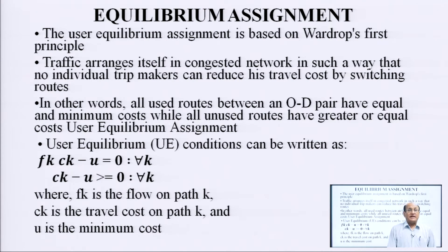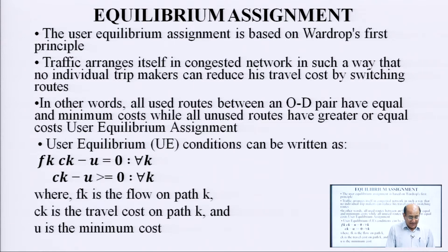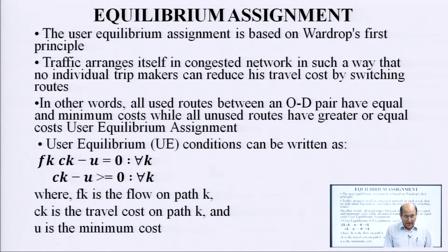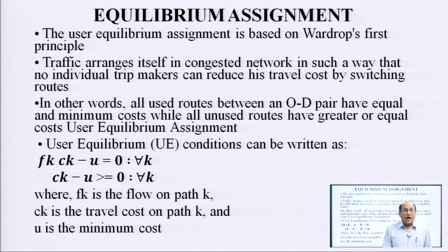Equilibrium assignment: the user equilibrium assignment is based on Wardrop's first principle. Traffic arranges itself in a congested network in such a way that no individual trip-maker can reduce travel cost by switching routes. In other words, all used routes between an origin-destination pair have equal and minimum cost, while unused routes have greater or equal cost.